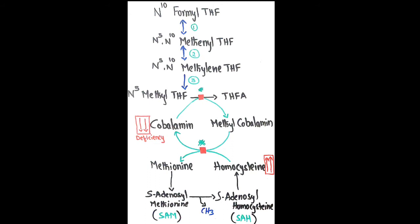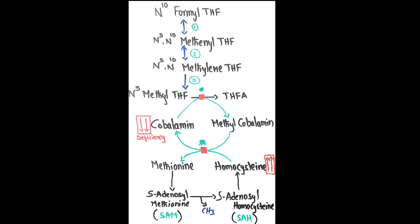The main function of folic acid is its role in one-carbon metabolism. One-carbon metabolism is the metabolism related to one-carbon units — compounds that contain only one carbon, such as formyl, methanol, methylene, methyl, and formamino groups. These one-carbon units are transported by folic acid. The active form, tetrahydrofolic acid, acts as the transporter of these one-carbon units to sites of synthesis such as purine and pyrimidine synthesis.